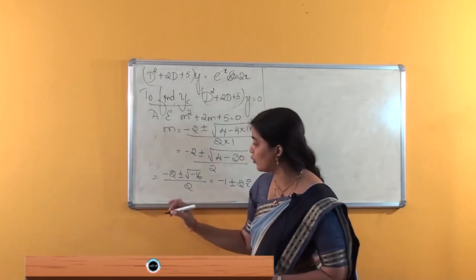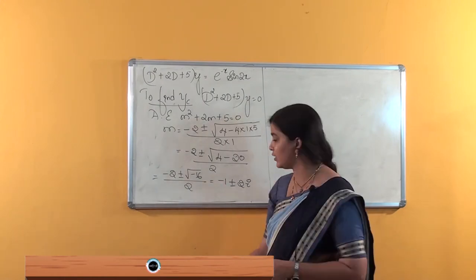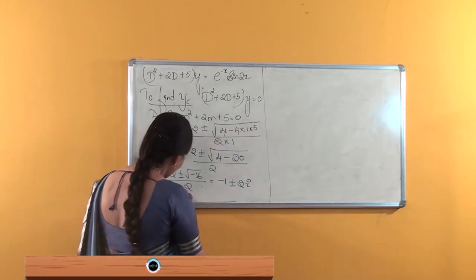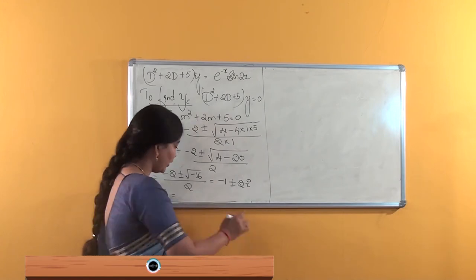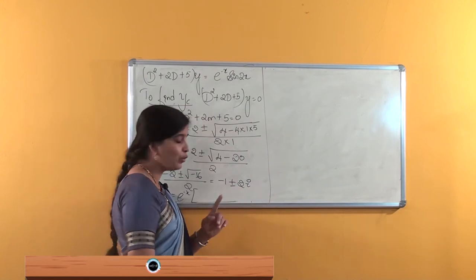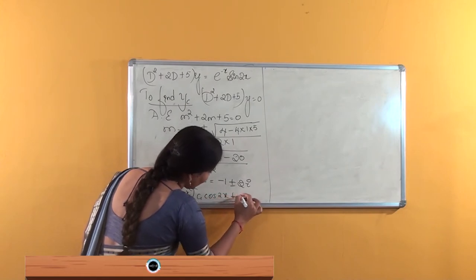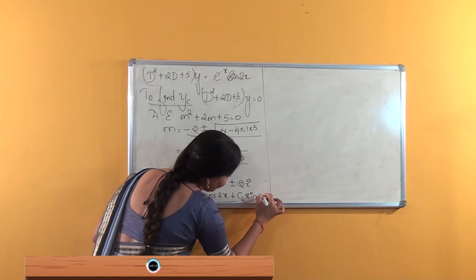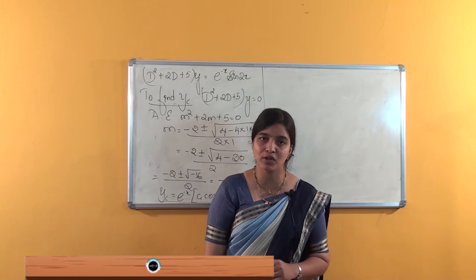We have obtained the roots of this equation: one is minus 1 plus 2i, and another is minus 1 minus 2i. The work left is writing the complementary solution. We have minus 1 here, so e^(−x) multiplied by (c₁ cos 2x + c₂ sin 2x). This is nothing but our complementary solution.